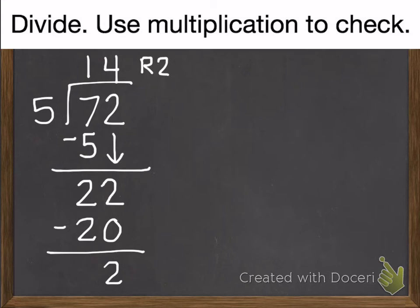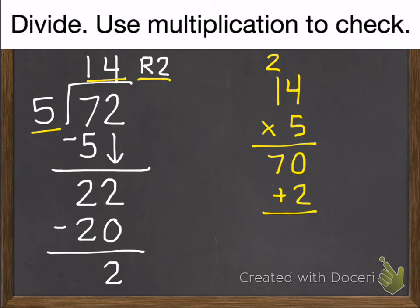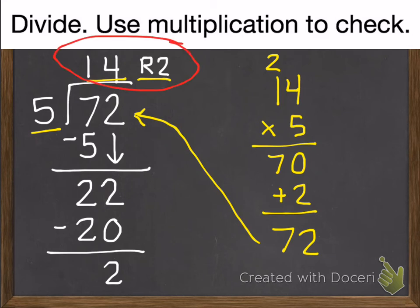Check my work with multiplication. Take my quotient times my divisor. 14 times 5. 5 times 4 is 20. 5 times 1 is 5, plus 2 is 7. Add in my remainder of 2, and I get 72, which is my dividend. So I know 14 remainder 2 is the correct answer.